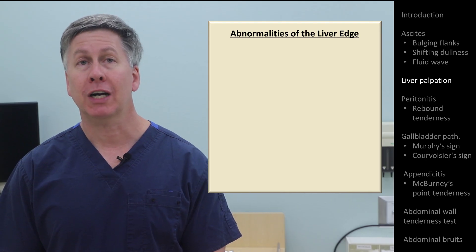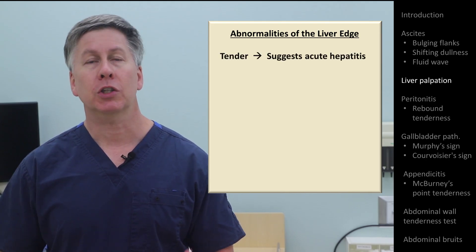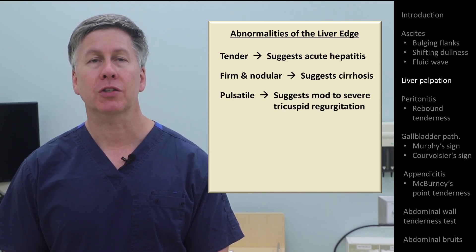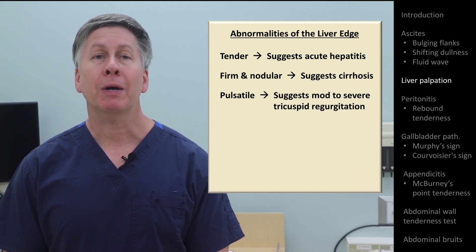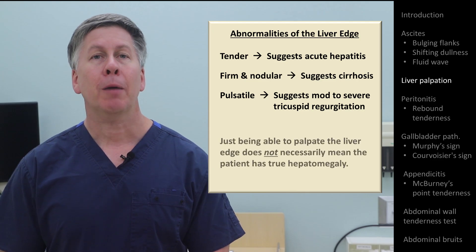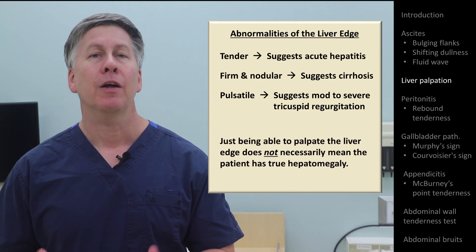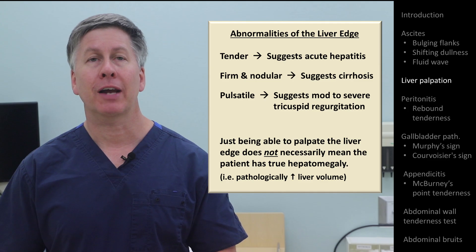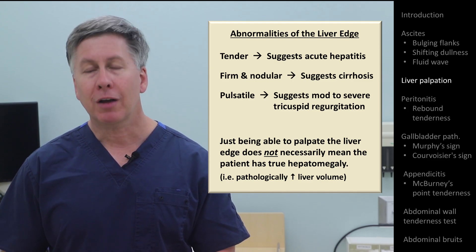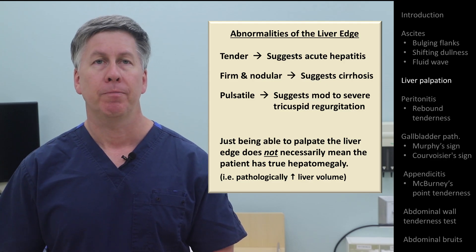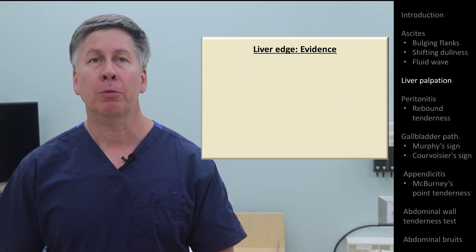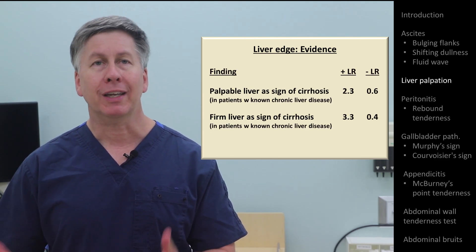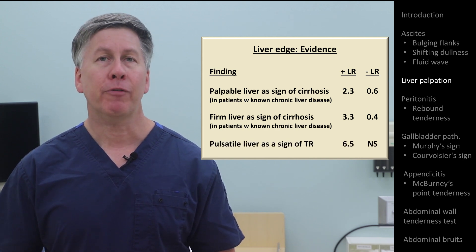If you manage to feel the liver edge before reaching the costal margin, note if it's tender — which suggests acute hepatitis — if it's firm and nodular, which suggests cirrhosis, or if it's pulsatile, which suggests moderate to severe tricuspid regurgitation. Despite occasional assumptions to the contrary, the ability to feel the liver edge does not necessarily mean the patient has hepatomegaly. True hepatomegaly is best identified on ultrasound or CT, but a palpable liver edge does increase its likelihood. Evidence supporting palpation of the liver edge is modestly helpful at both ruling in and ruling out cirrhosis, and moderately helpful at ruling in tricuspid regurgitation, but not helpful at ruling it out.